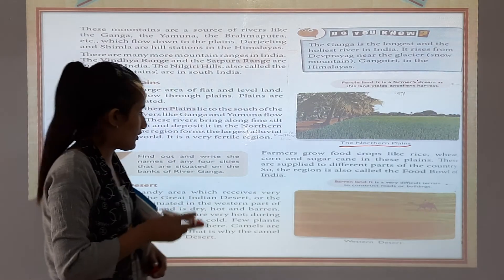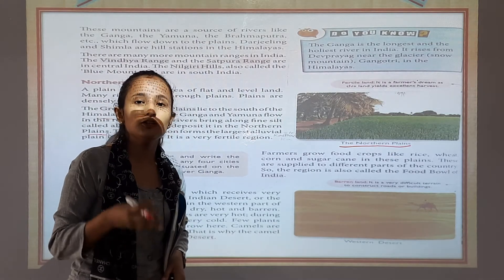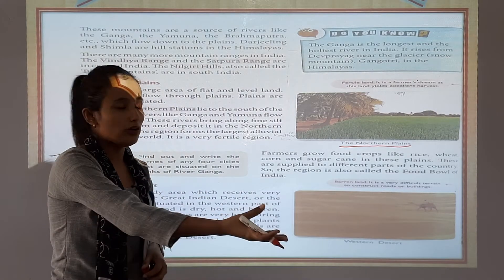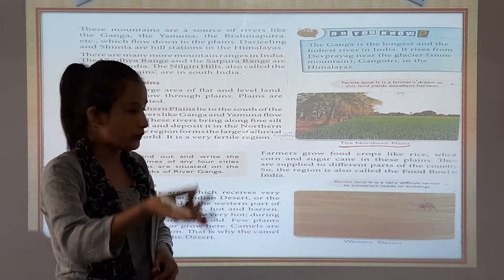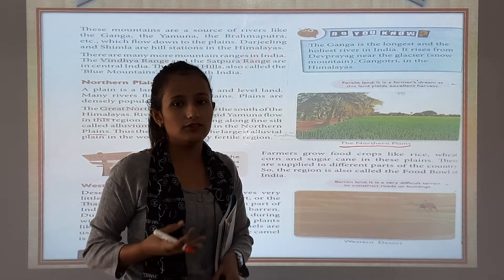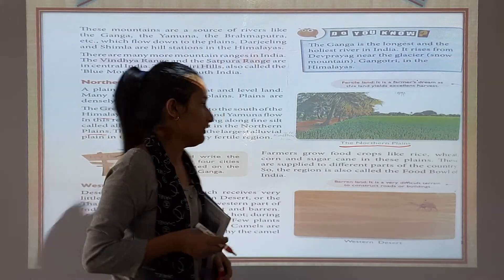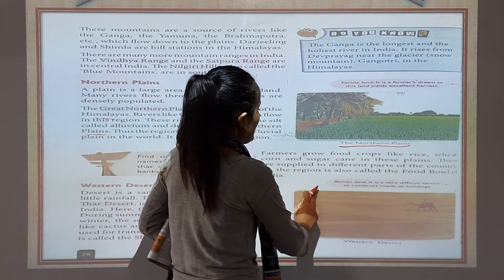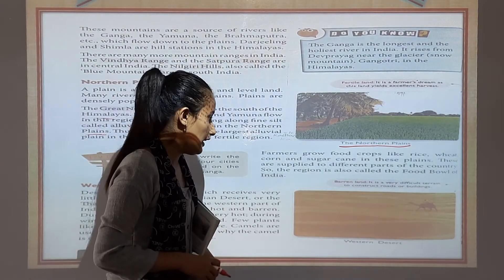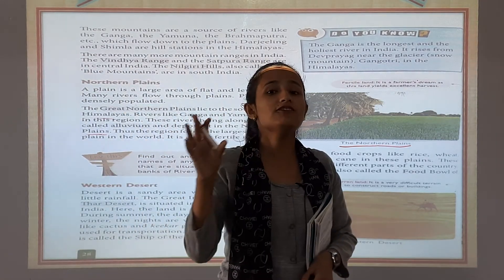Farmers grow food crops like rice, wheat, corn, and sugarcane in this plain. We can find so many vegetables and plants in the plain areas because farmers grow them here. These are supplied to different parts of the country, which is why this region is also called the food bowl of India.